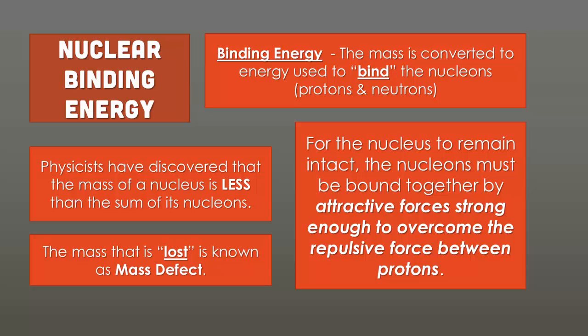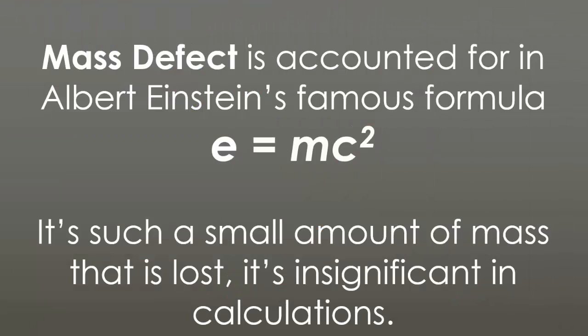Physicists have discovered that the mass of the nucleus is actually less than the sum of its nucleons. One proton, one neutron would give you a mass of two, but they've determined it's actually slightly less. Because it's slightly less, we call that mass that's lost the mass defect. And that mass that is lost is your binding energy, the energy used to bind the nucleons together. Mass defect is accounted for in Albert Einstein's famous formula E equals mc squared.